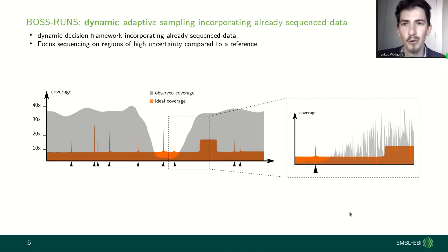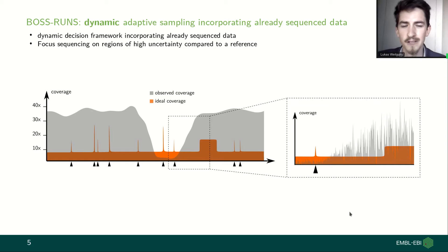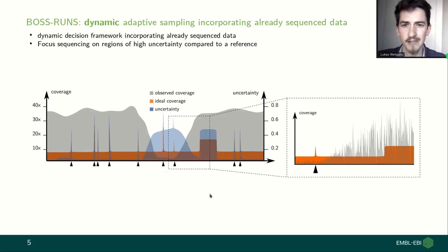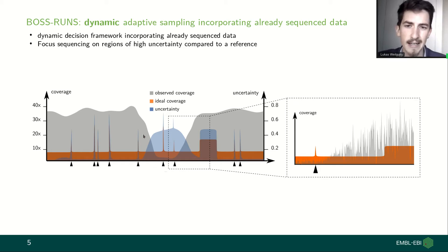What we introduce with this work is dynamic adaptive sampling, where we incorporate already sequenced data. We have a dynamic decision framework that allows us to focus the sequencing on regions of high uncertainty compared to the reference genome. We first need to introduce some measure for the uncertainty of each site — a measure that combines the information we have about the coverage and about variation at some site.